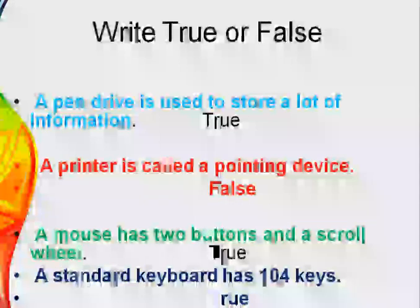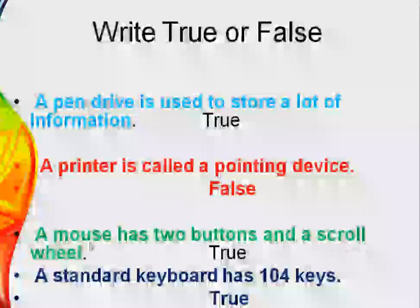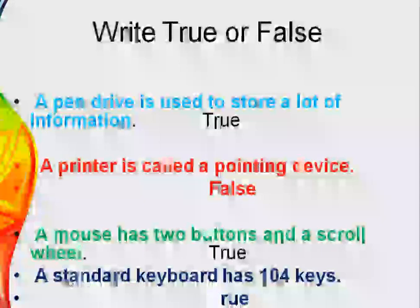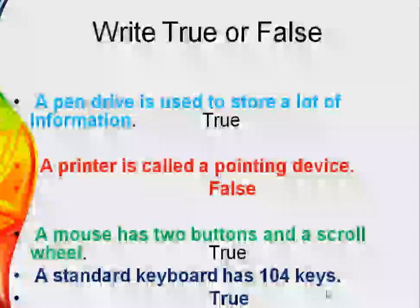Third: A mouse has two buttons and a scroll wheel — that is true. A mouse has one left button, one right button, and also a middle button which is the scroll wheel. Fourth: A standard keyboard has 104 keys — yes, that is correct. There are 104 keys in a standard keyboard.